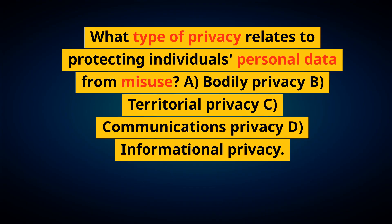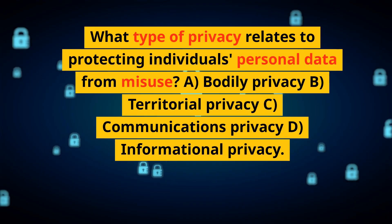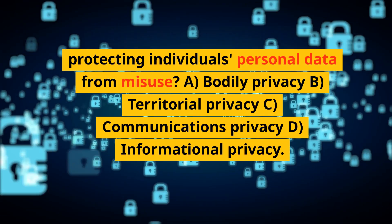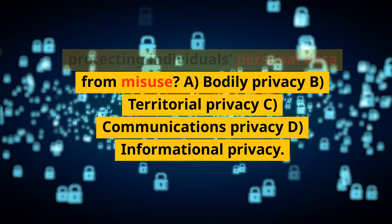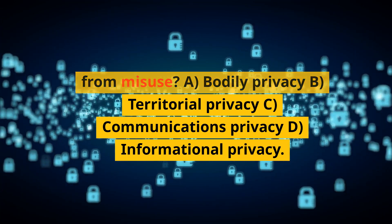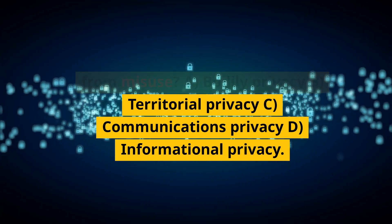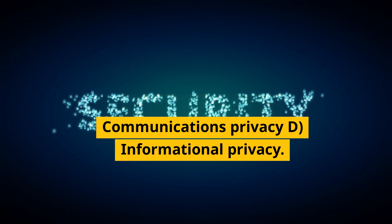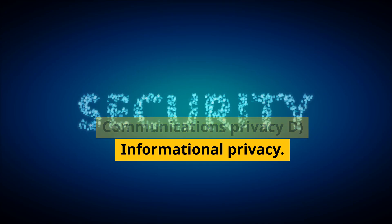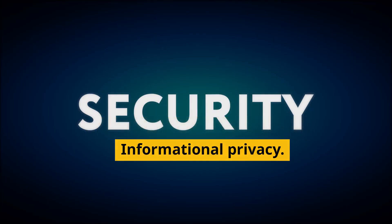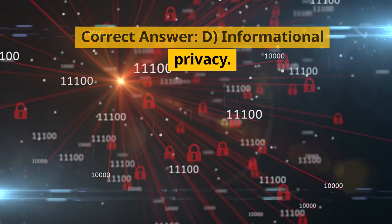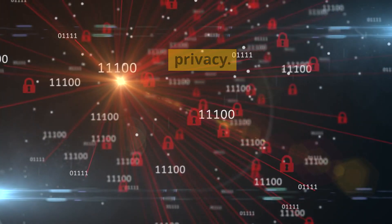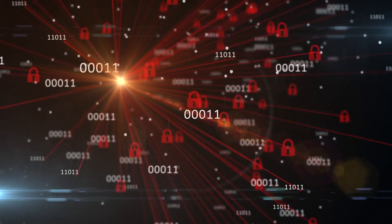What type of privacy relates to protecting individuals' personal data from misuse? A. Bodily privacy. B. Territorial privacy. C. Communications privacy. D. Informational privacy. Correct answer: D. Informational privacy.